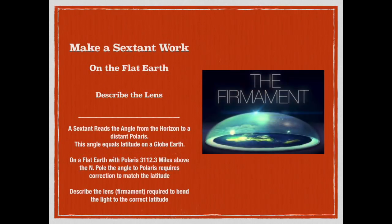Let's clarify a few things. On a globe Earth — also known as reality — when you read the angle to Polaris from the horizon you get your degree of latitude. On a flat Earth, with Polaris being small and local, you can directly calculate the angle it will appear above the horizon based on the distance from the pole. Unfortunately, this raw distance has no relationship to the actual degree of latitude as it does in the real world with a sextant.